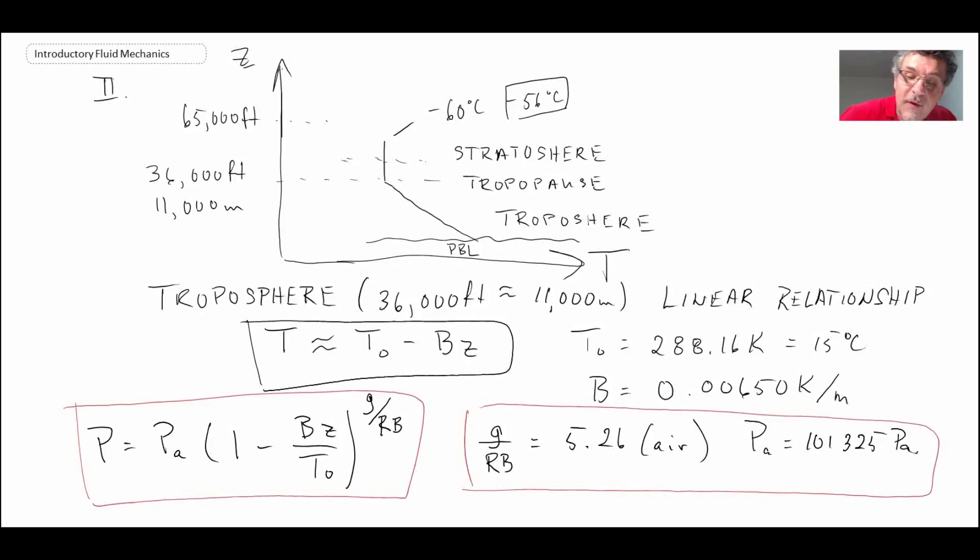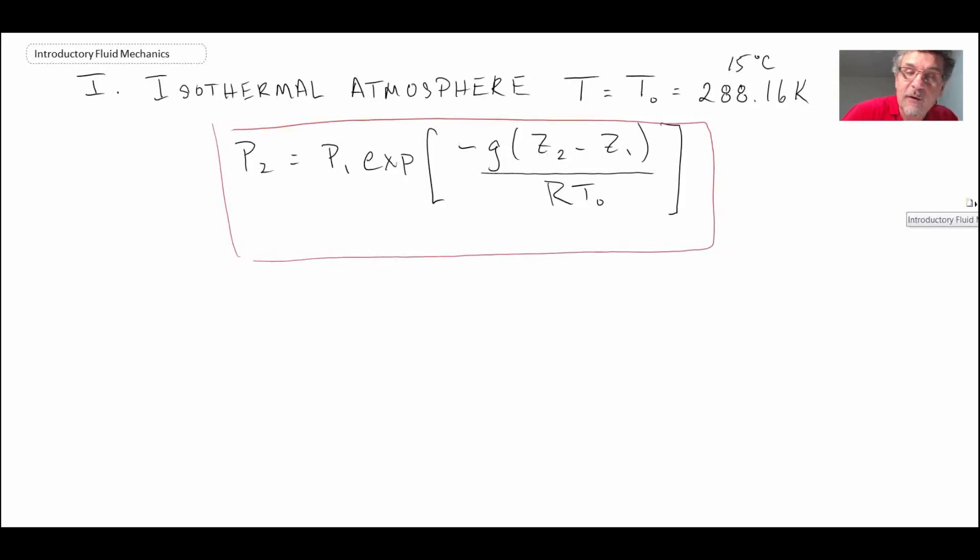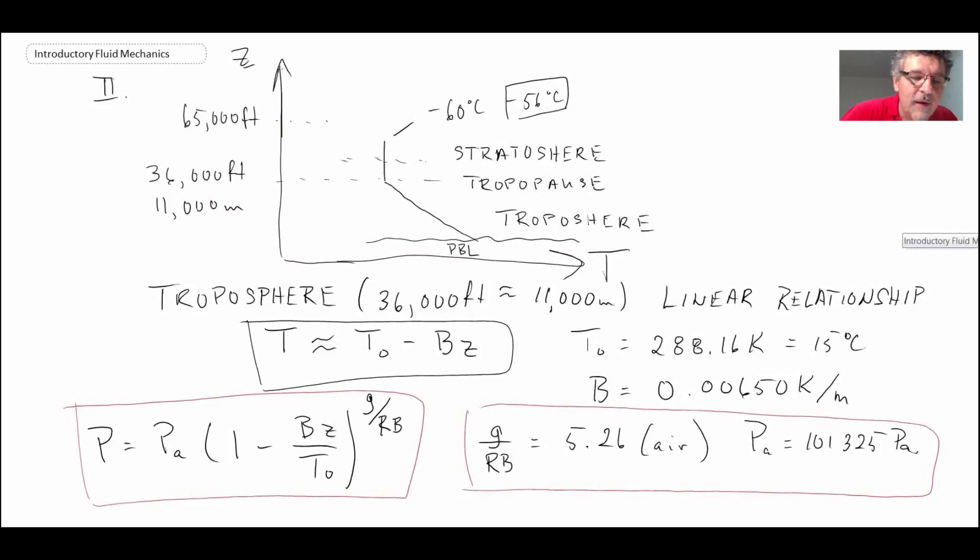So two different relationships. The first one we had was if we had an isothermal atmosphere, you can use that. And if you're in the troposphere, below the tropopause, you can use this relationship here to estimate the pressure of the atmosphere as you go up. Those are two cases of looking at hydrostatic pressure distribution for a gas. In this case, we've looked at air and our atmosphere.